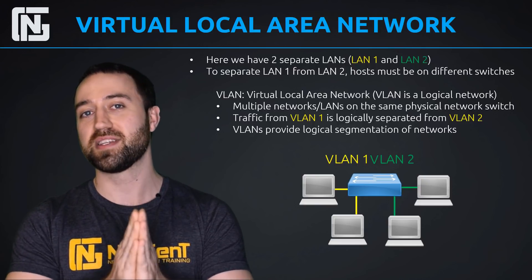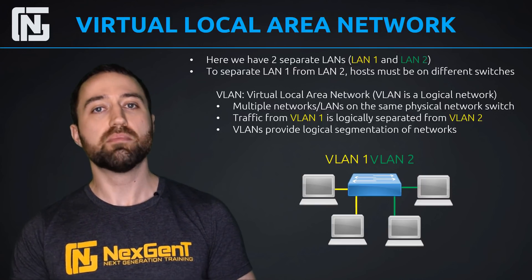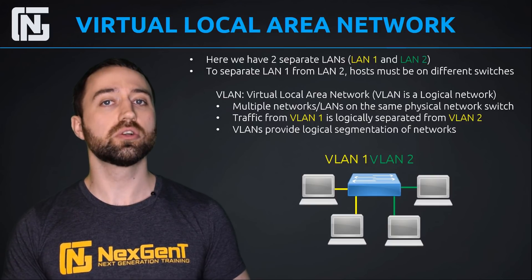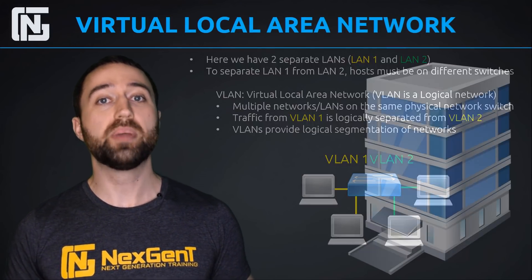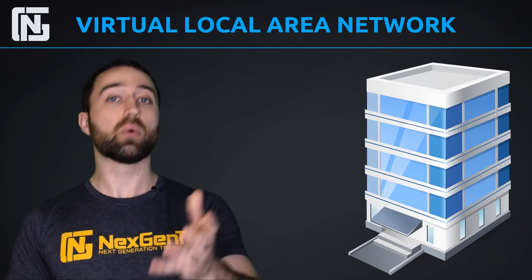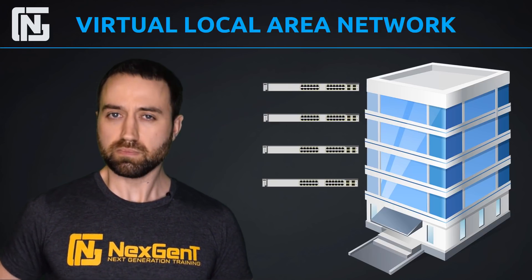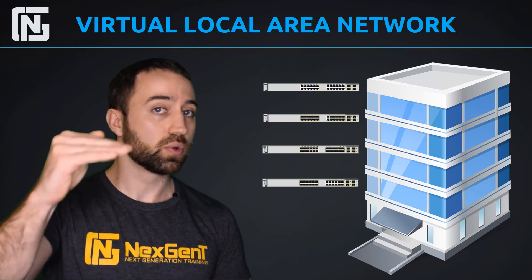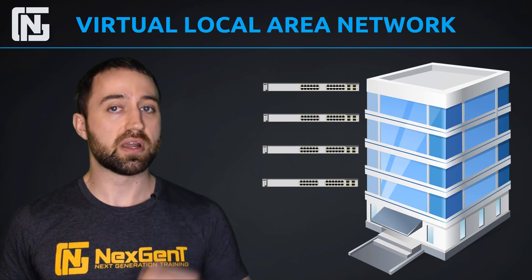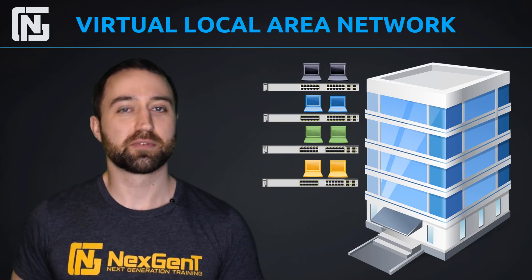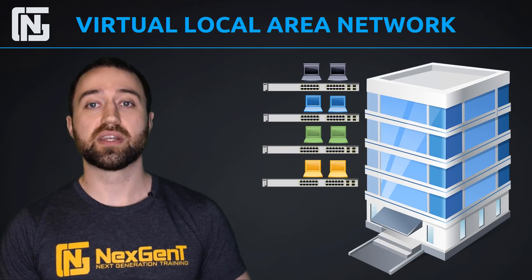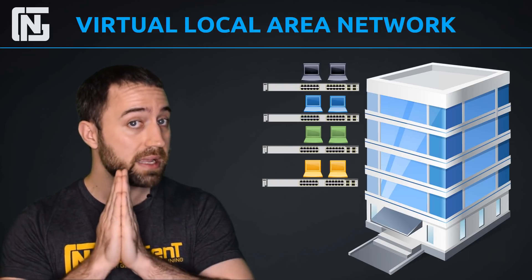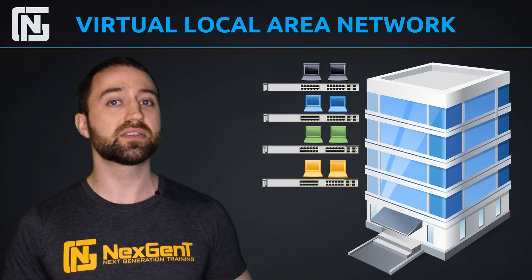VLANs provide logical segmentation of networks — that's the key definition. In a real-world scenario, let's say you're a network engineer managing the networks of a building and you've installed switches on every floor. Pre-VLAN era, if you wanted four different networks you'd need the hosts for each network all connected to the same switch. For example, the black network connected to the top switch, blue to the second switch, and so on — hosts had to be connected to the same piece of hardware to share a network.